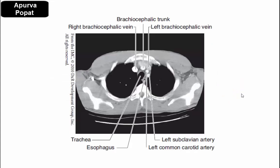Applying mediastinum knowledge to a CT scan: the orientation is as if viewing the patient from the foot end while they are lying down, so the patient's right is on our left. From dorsal to ventral in the superior mediastinum: the most posterior structure is the esophagus, then the trachea in front of it, then the arterial plane showing the brachiocephalic trunk, left common carotid, and left subclavian artery, then the venous plane with the right and left brachiocephalic veins, and most anteriorly the thymus (in a child less than 14 years).